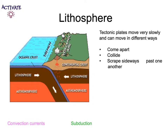The tectonic plates are kind of floating on the mantle, which means that they can move, and they can move in different ways. They can come apart, they can collide, or they can scrape sideways past each other.